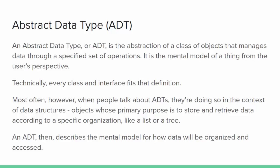An abstract data type, or ADT, is the abstraction of a class of objects that manages data through a specified set of operations. It's the mental model of a thing from the user's perspective. Now technically every class and interface in Java would fit that description because classes and interfaces define sets of behaviors for an object.